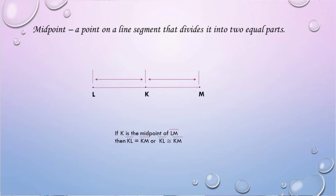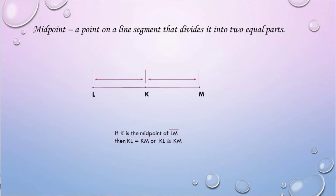Next, we have midpoint — a point on a line segment that divides it into two equal parts. We have here segment LM and point K is the midpoint. If K is the midpoint of segment LM, then segment KL is equal to segment KM, or segment KL is congruent to segment KM.